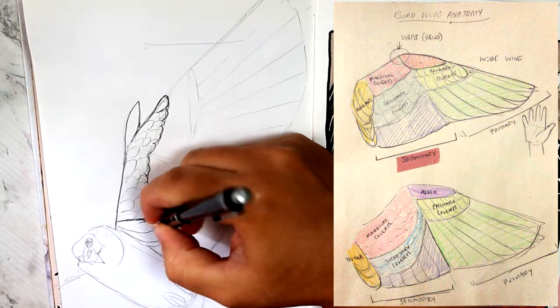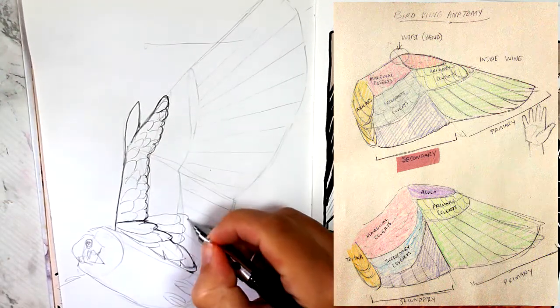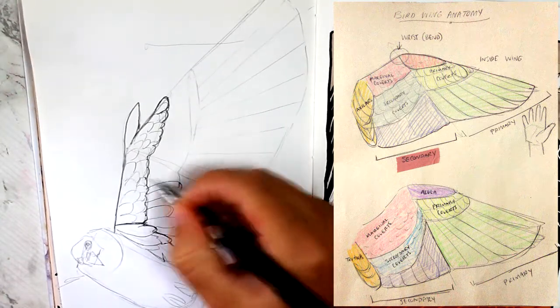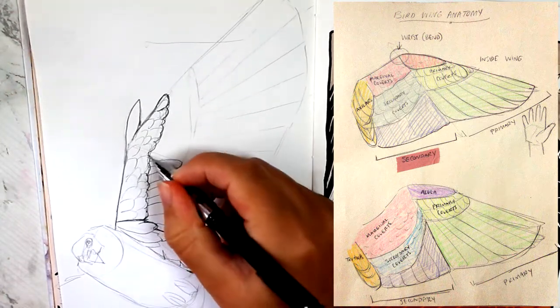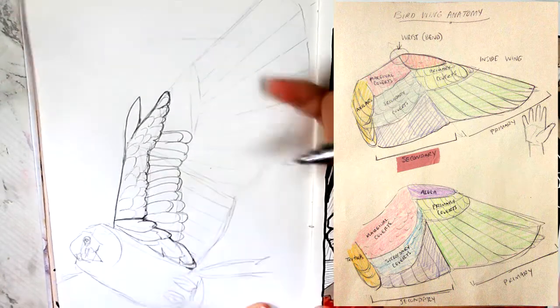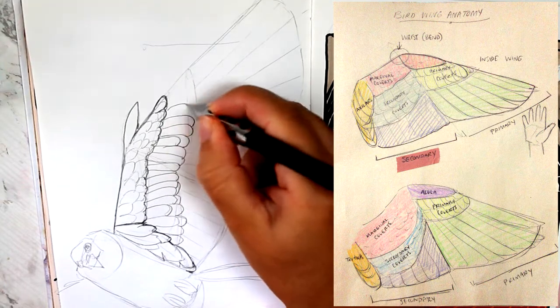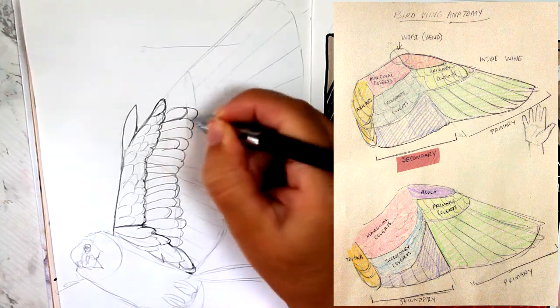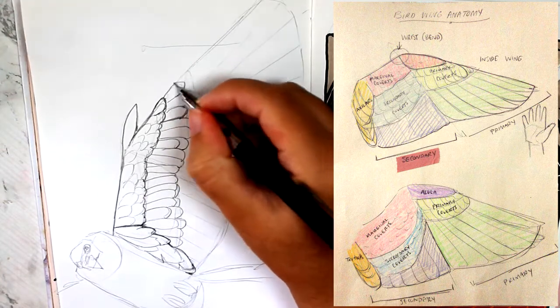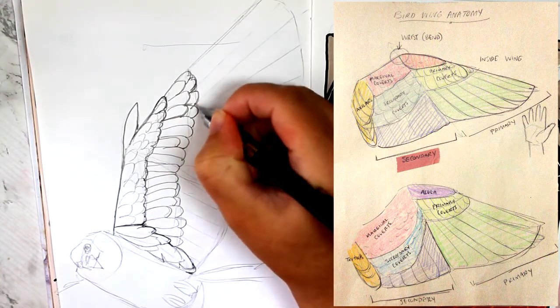So these secondary and primary coverts are slightly larger feathers. They're always kind of rounded, and they come in multiple layers a lot of the time. So I'm just going to do a nice stacked looking pile of round feathers here. Remember when you get to the elbow, the angle of the feathers might change. See, this looks pretty good.